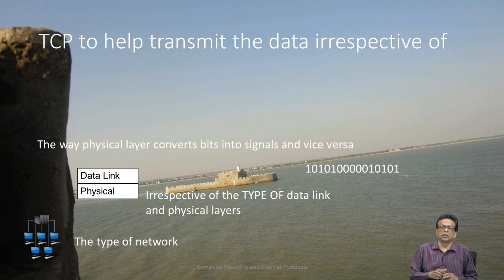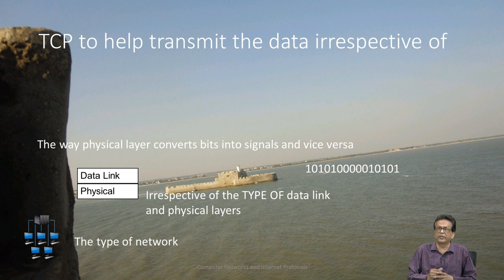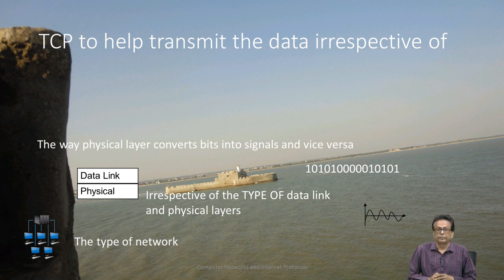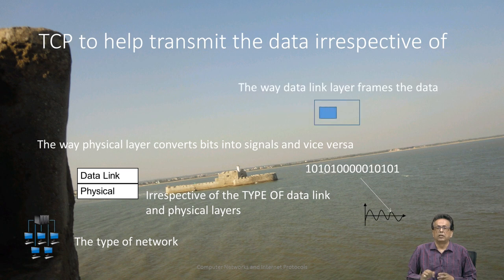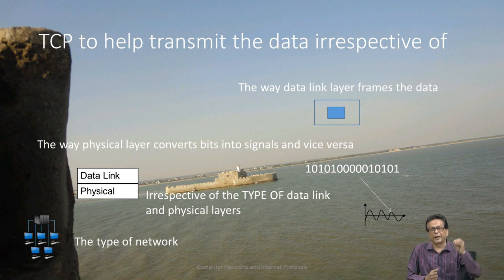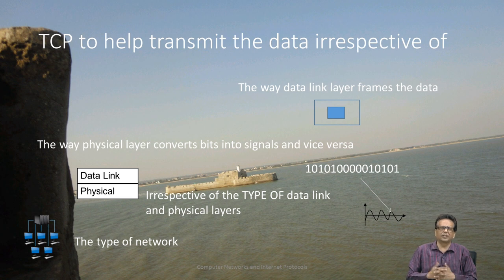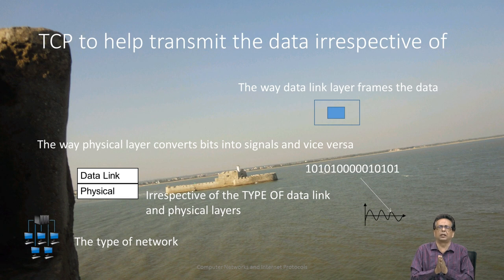The way the physical layer converts bits into signals — and there are many ways of doing it — is not an easy job. There is an entire discipline called data communication that talks about this: how data bits are converted into signals, and how the data link layer frames the data. Remember that the packet from the network layer is buried inside the data link layer frame. TCP does not bother about any of that — physical, data link, or network layer.